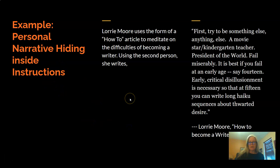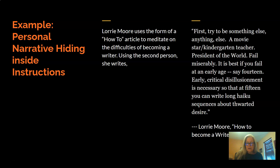An example: Lori Moore uses the form 'how to' — like how do you build a box or an IKEA dresser — to meditate on the difficulties of becoming a writer. Using the second person, she writes: 'First, try to be something else, anything else — a movie star, a kindergarten teacher, president of the world. Fail miserably. It is best if you fail at an early age, say 14. Early critical disillusionment is necessary so that at 15 you can write long haiku sequences about thwarted desire.' You'll notice her tone is a little snarky, which is funny and great. But she's writing to herself while addressing you using the 'you' voice — she's kind of a trailblazer in that way, launching a style of writing using the you voice.